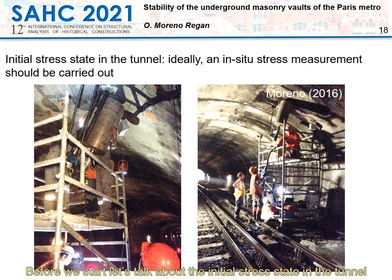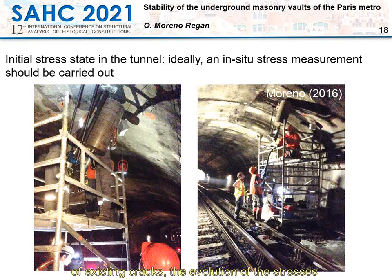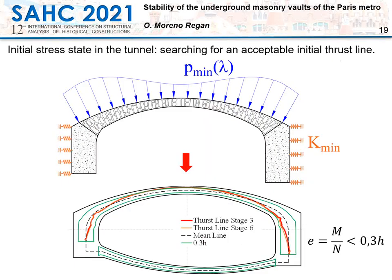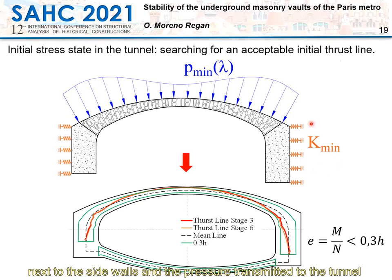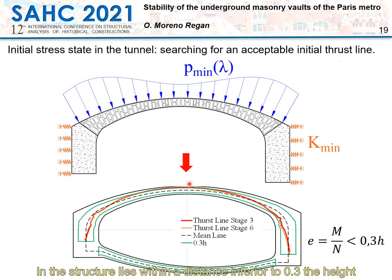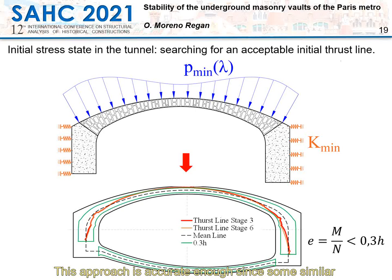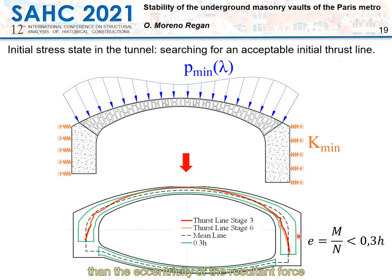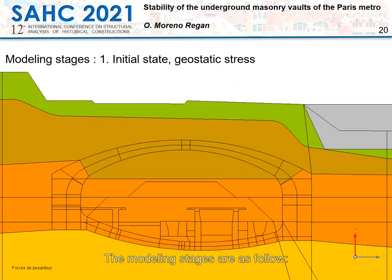Before we start, let's talk about the initial stress state in the tunnel. This is very important since without an accurate representation of the existing cracks, the evolution of stress and deformation won't be reliable. Ideally, an in-situ stress measurement should be carried out. Since we didn't have any for this study, I proposed an approximate approach: soil stiffness next to the sidewalls and the pressure transmitted to the tunnel were chosen such that the thrust line position lies within a distance inferior to 0.3 times the height of the cross-section relative to the midline.